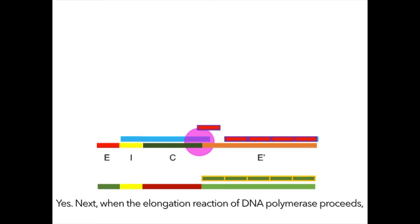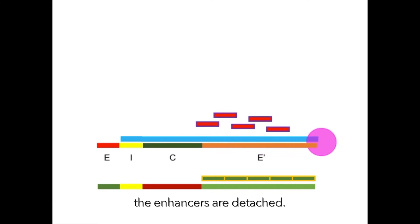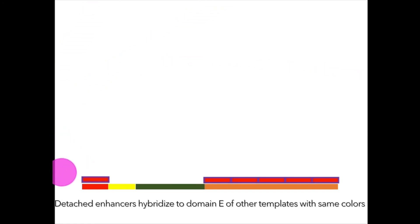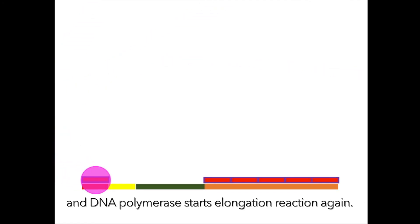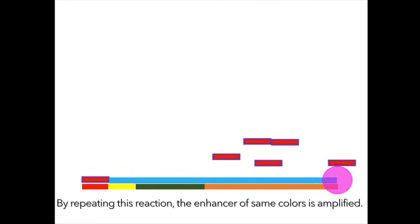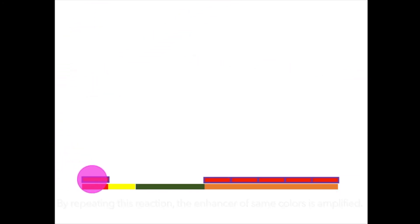Next, when the elongation reaction of DNA polymerase proceeds, the enhancers are detached. Detached enhancers hybridize to domain E of other templates with the same colors and DNA polymerase starts elongation reaction again. By repeating this reaction, the enhancer of the same color is amplified. I see.